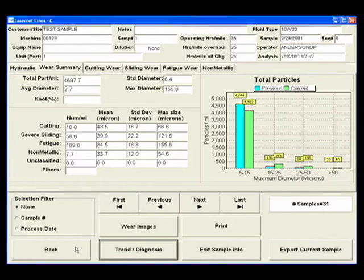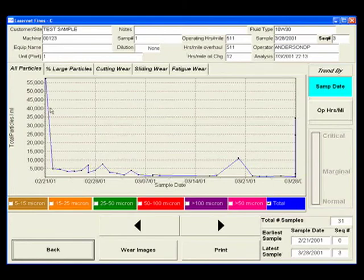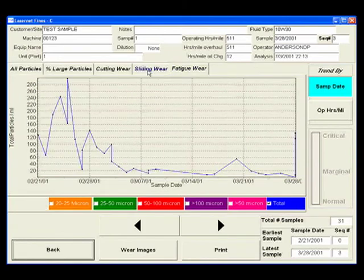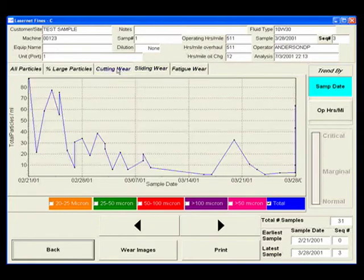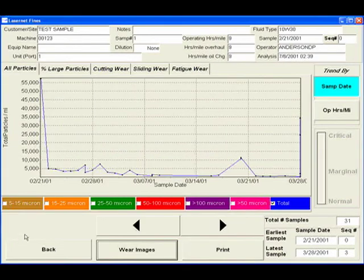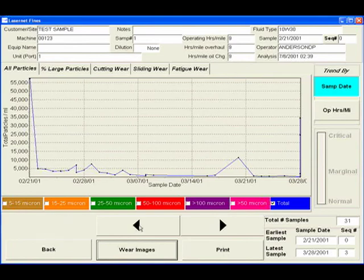Another distinct feature of the LNF software is its ability to trend different types of wear. For instance, the user has access to graphical representation of all the different wear types as well as the size distribution. Trends can be tracked according to the sample date, the sample number, mileage, or operating hours of the machine.